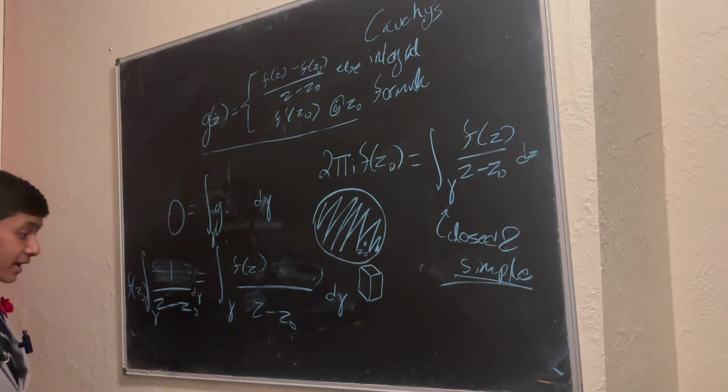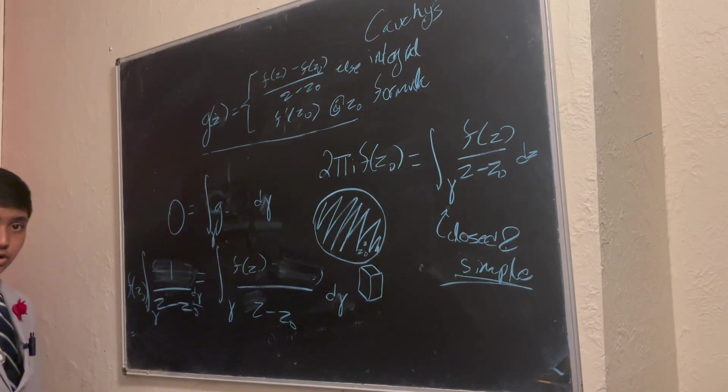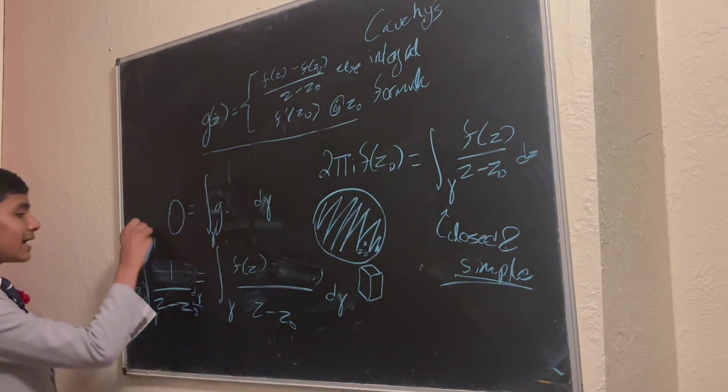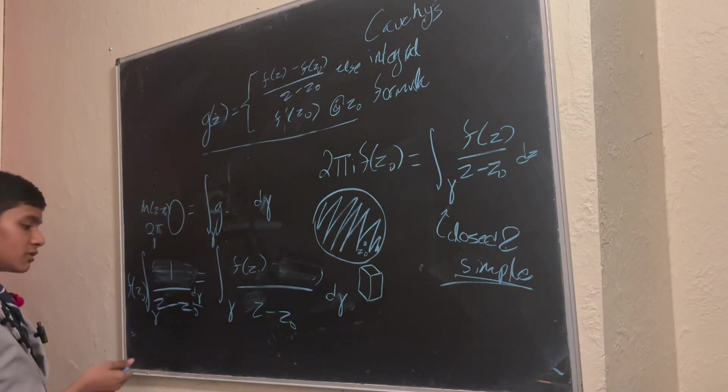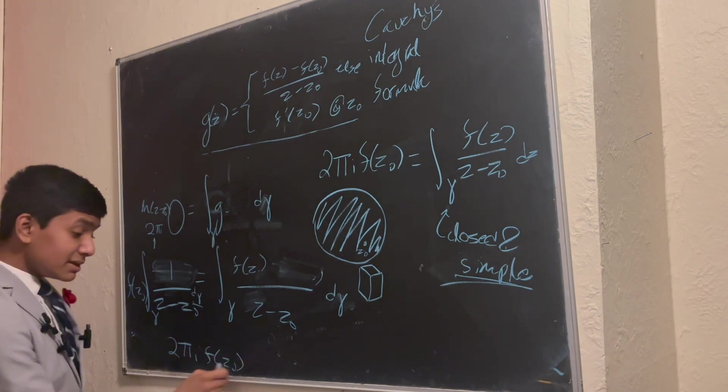And even better, one over z minus z0 has a fixed integral for any simple closed curve. It's always exactly equal to 2 pi i, due to the branch cut of ln of z minus z0, which means this reduces to 2 pi i f of z0. That's how simple it is.